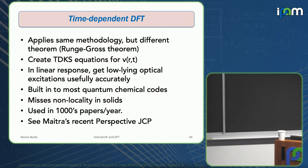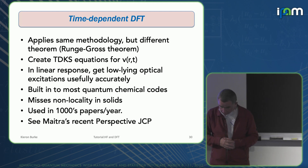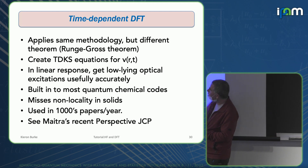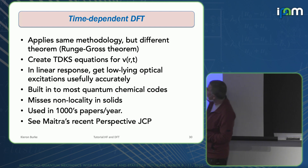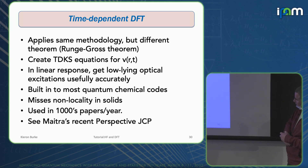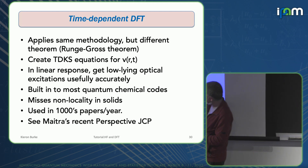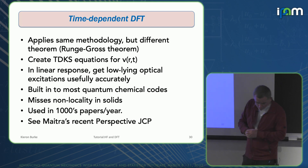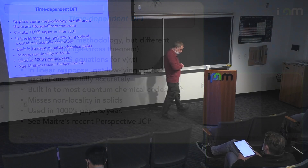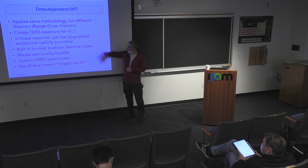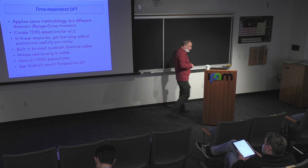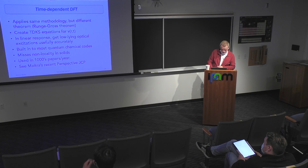Another thing is time-dependent DFT. Everything I've told you about is ground state DFT. But there's an analogous theorem for time-dependent systems — you can prove the Runge-Gross theorem, the analog of Hohenberg-Kohn, and set up time-dependent Kohn-Sham equations. If you look at linear response, people get low-lying optical excitations pretty well from this. Almost all chemical codes will do a TD-DFT calculation, at only about ten times the cost of a ground state DFT calculation.